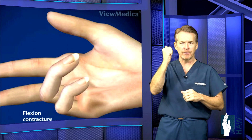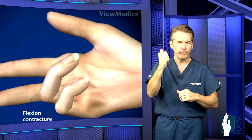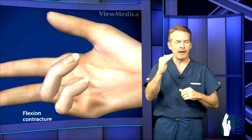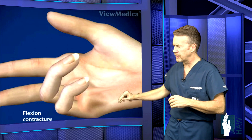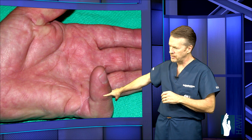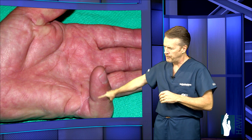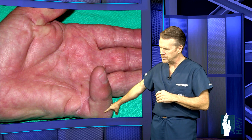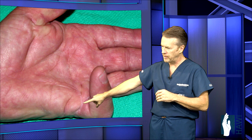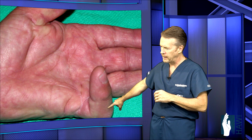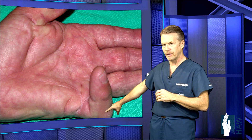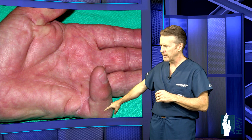They can still bend fully and make a full fist, but they can't straighten out. Let's take a look at the actual patient that had a PIP flexion contracture. The MCP joint straightened out all the way, but there was almost a 90-degree bend at the PIP joint.